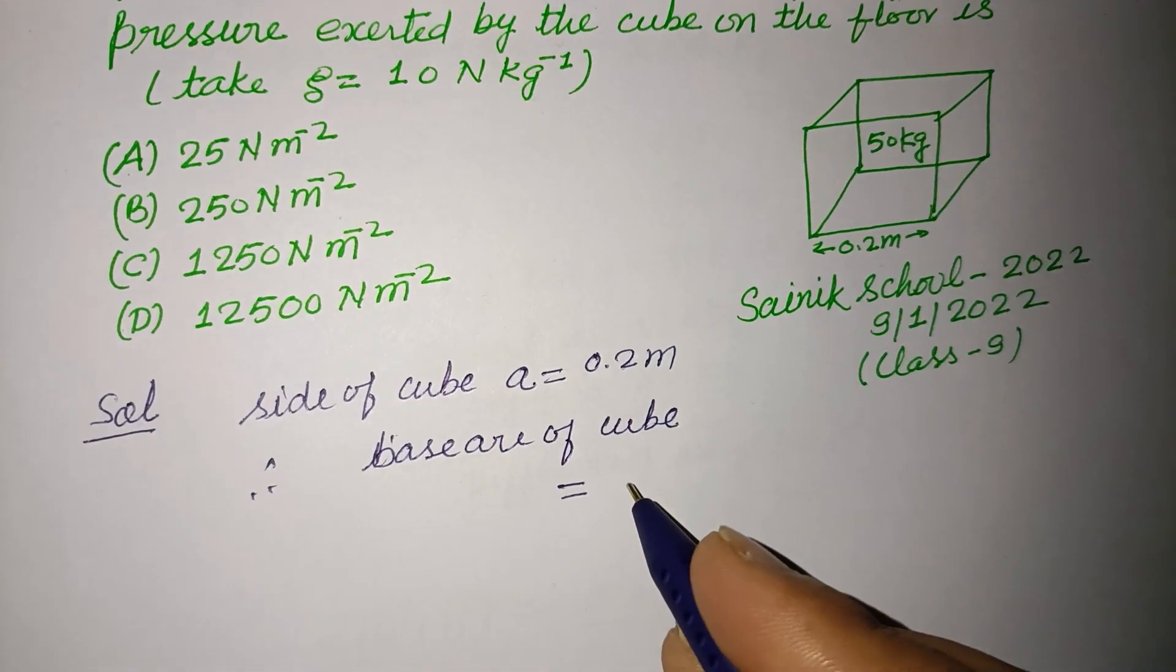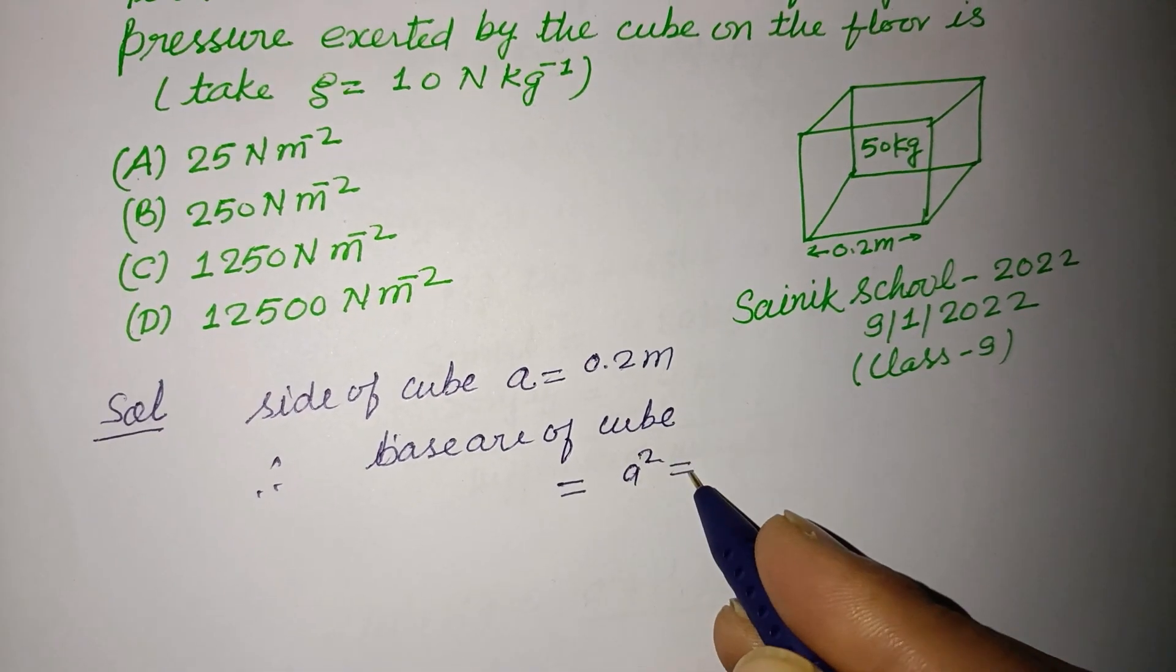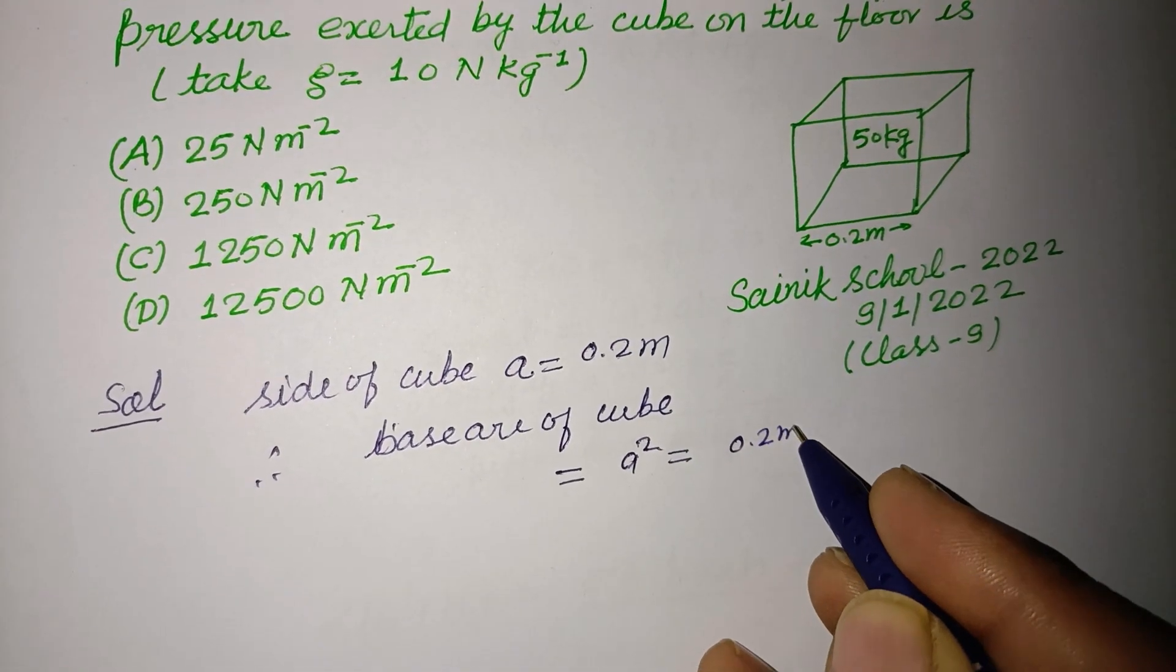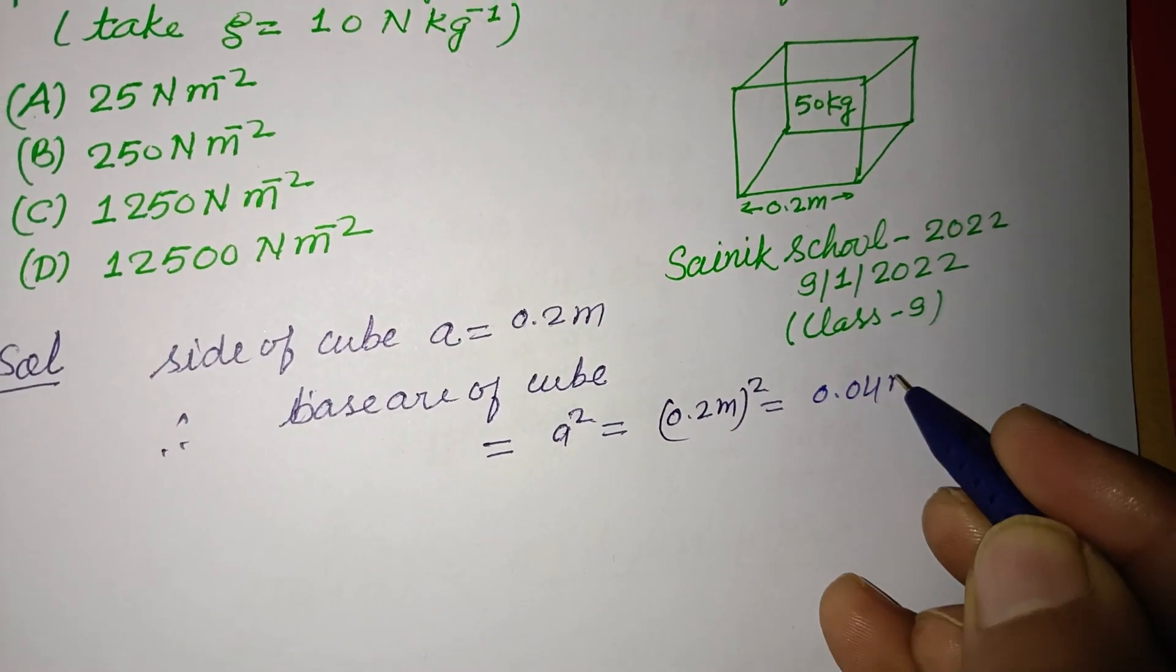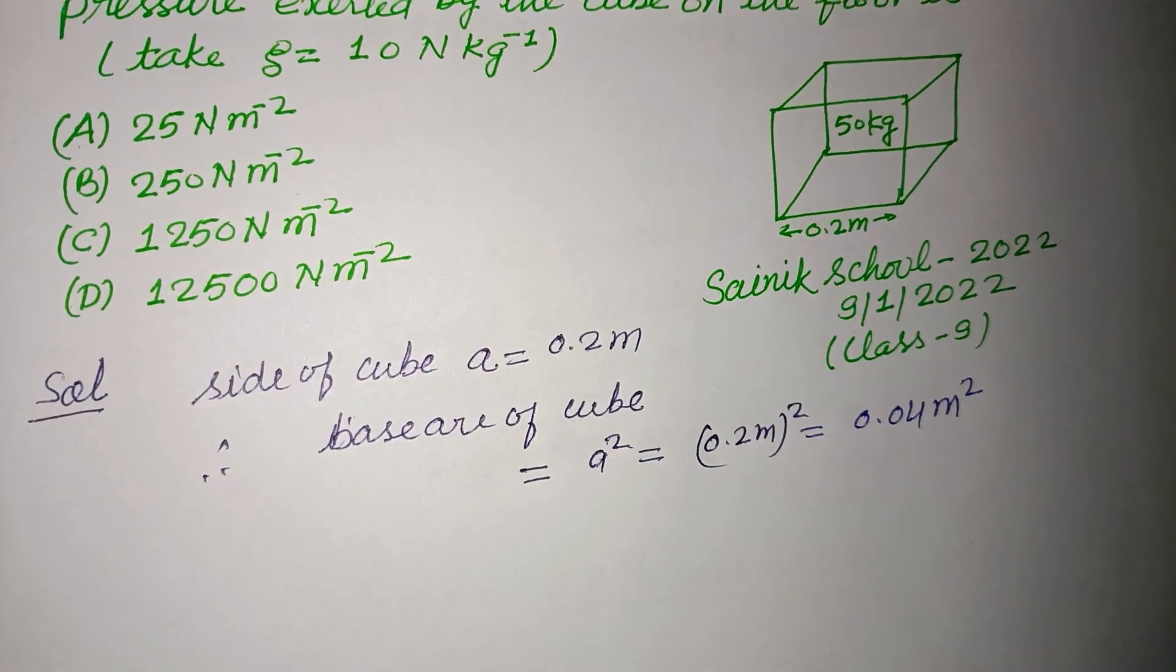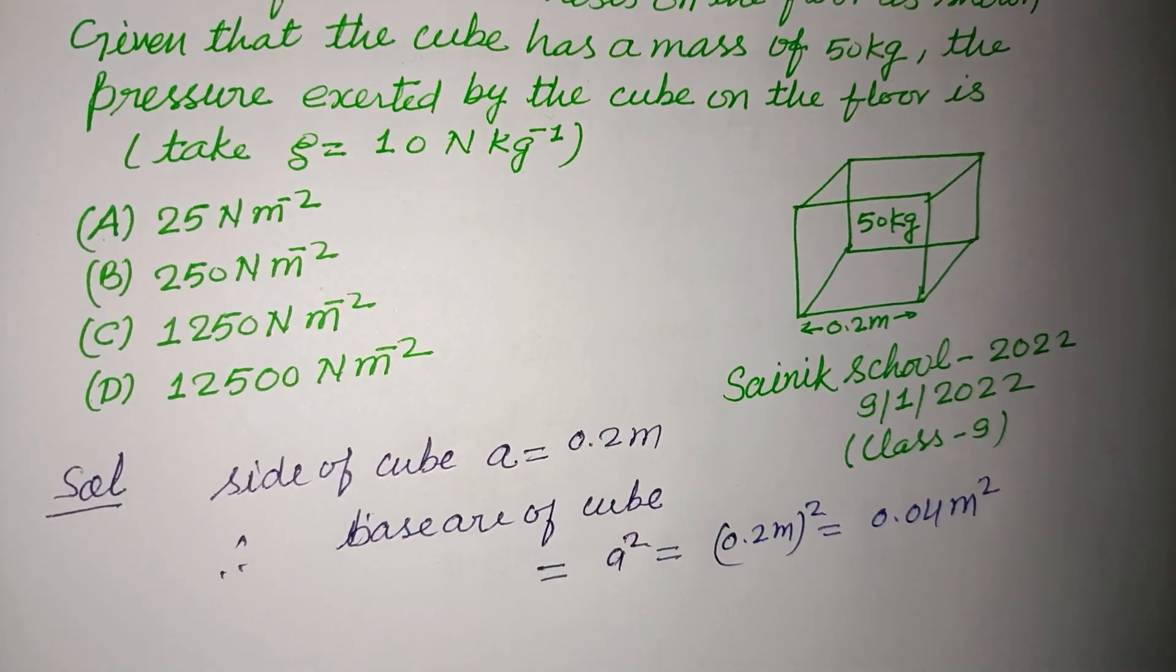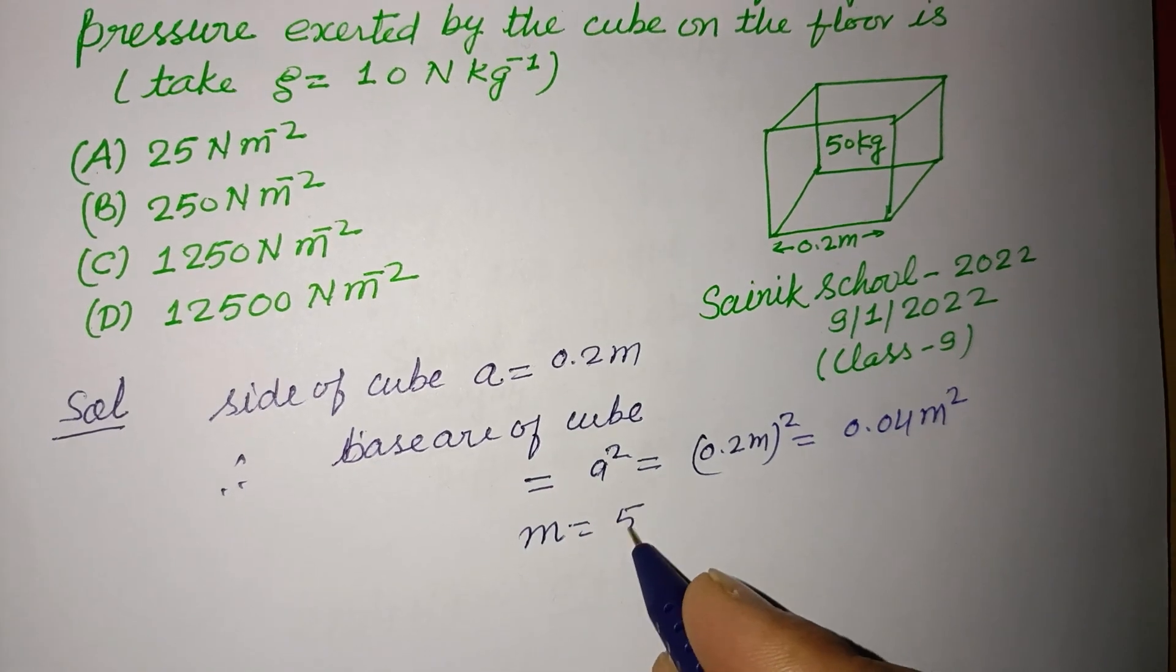So side squared equals 0.2 meters squared, which equals 0.04 meters squared. Mass of the cube is 50 kilograms.